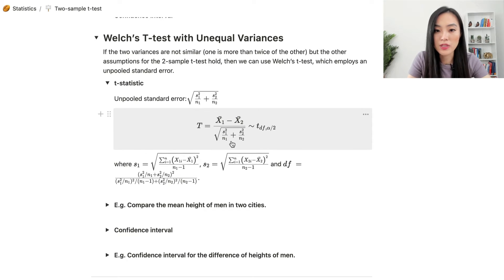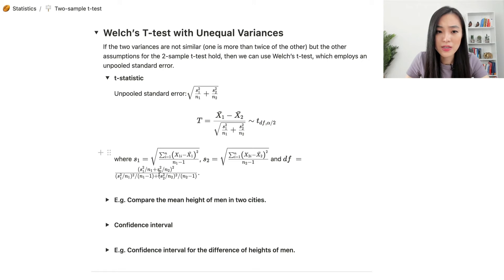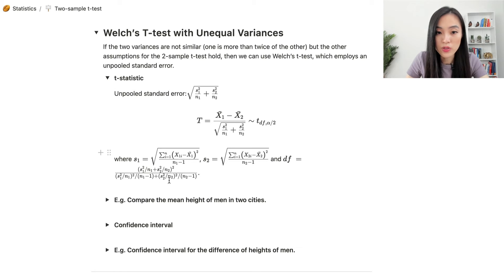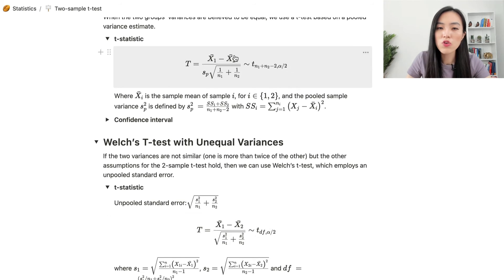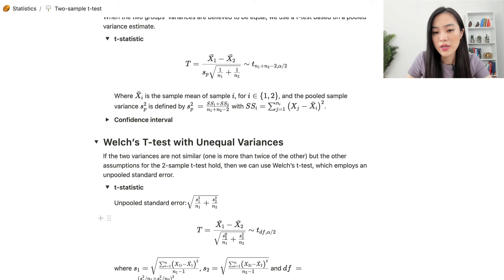The degrees of freedom for Welch's t-test is a bit more complicated. It's (s1²/n1 + s2²/n2)² divided by [(s1²/n1)² / (n1 - 1) + (s2²/n2)² / (n2 - 1)]. So the two differences between the equal variance and unequal variance scenarios are the denominator of the test statistic and the degrees of freedom.